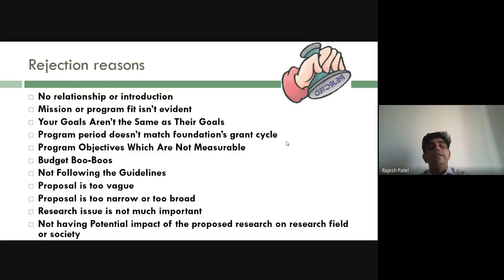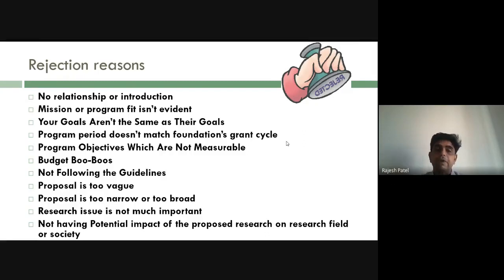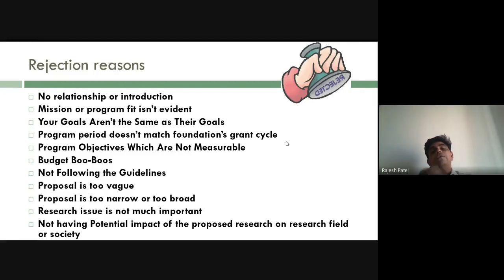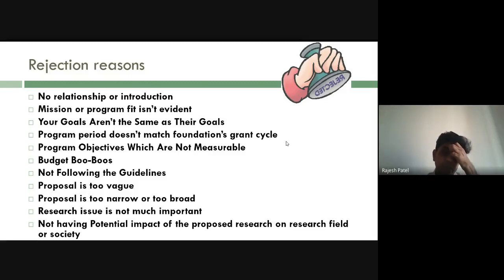Another reason for rejection is poor mission or program fit. When writing the justification, you must clearly state that your proposal meets the specific objectives or mission of the funding agency. Always try to develop alignment between your research goals and the funding body's goals. If that alignment is not directly reflected in the proposal, even if it exists conceptually, it will not be recognized by the evaluator.